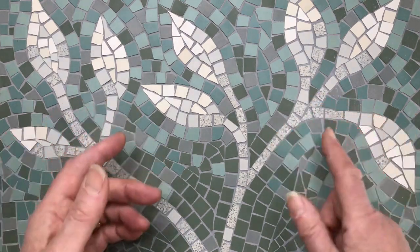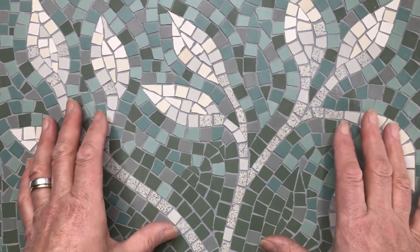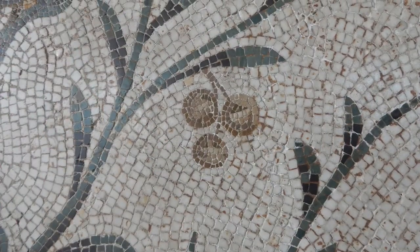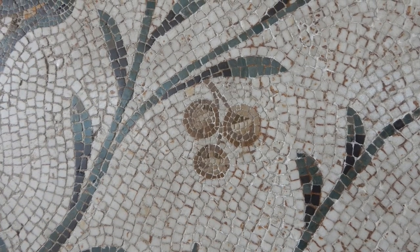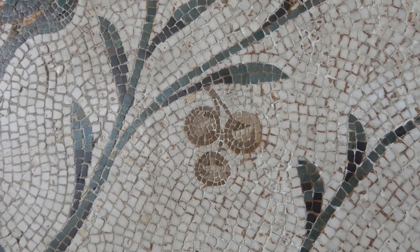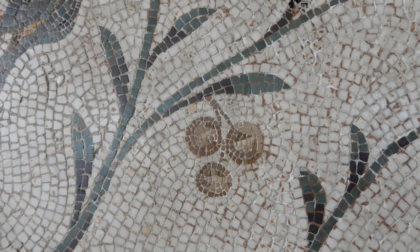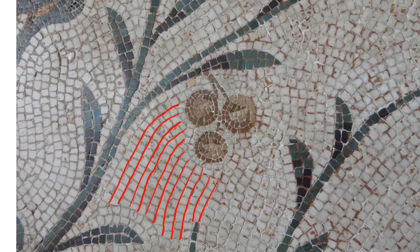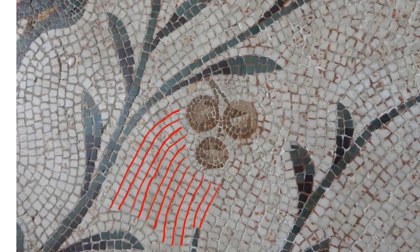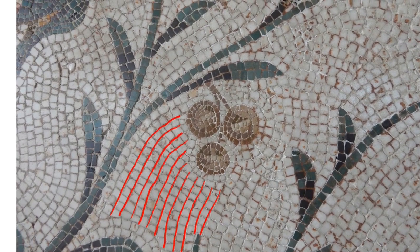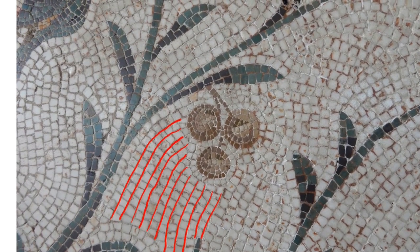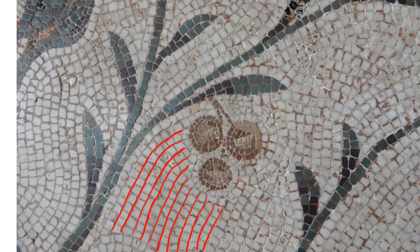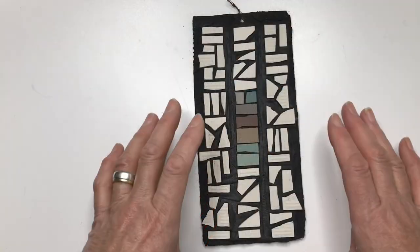The reason why the interstices are so important is that they create patterns or lines which distract the eye unless you're paying attention to what you're doing. This detail from the Bardo Museum in Tunisia gives you an idea of what I mean about the lines or the brushstrokes in the background of the piece. Here I've drawn on the lines in just one part of the detail to show you what I mean. All the time when you're laying your tesserae, you should be aware of the lines you're creating and use those lines for the effects that you want to achieve.